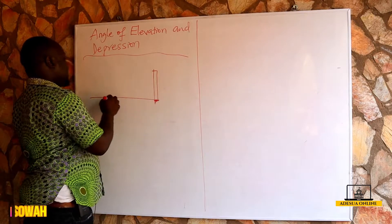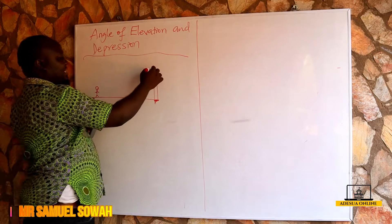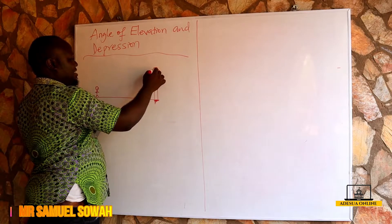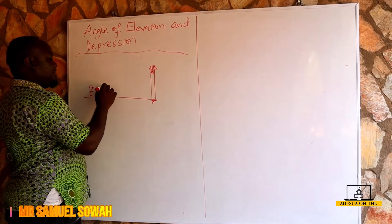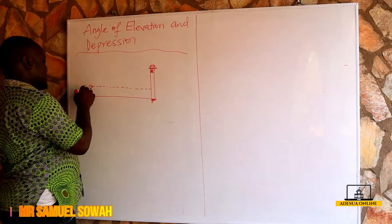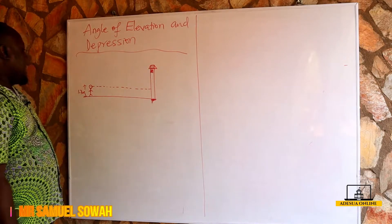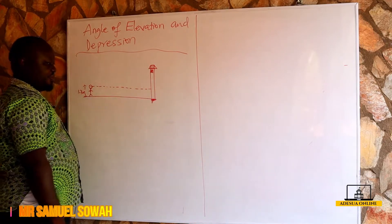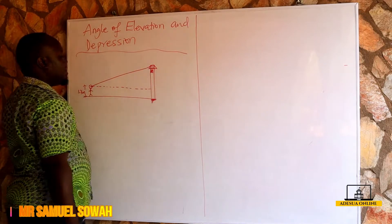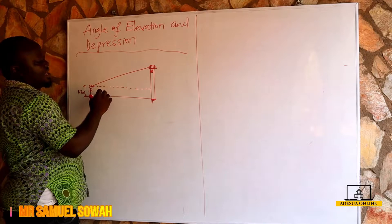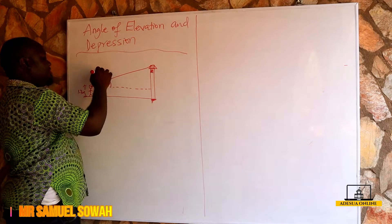This is Coffee, walking towards Amma's house. Amma is somewhere here, and this is the roof of Amma's house. Coffee's height is 1.7 meters — that is his eye level. Coffee is watching the roof of Amma's house, and this angle his eye makes with the roof is called the angle of elevation.